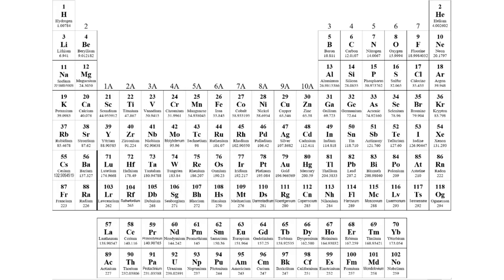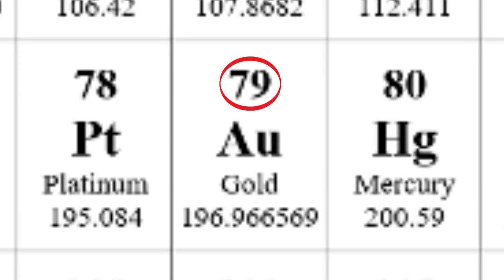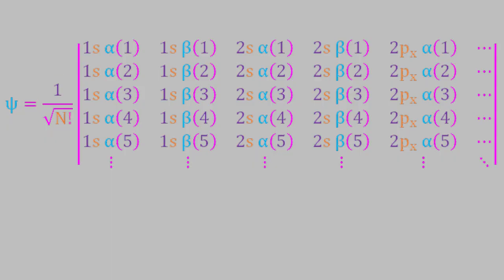So, for example, if we look at a gold atom, we can see that gold has 79 electrons. So, we'd have a determinant with 79 rows and columns. Notice that there's also a normalization constant in front of the determinant, and it's just equal to 1 over the square root of n factorial.